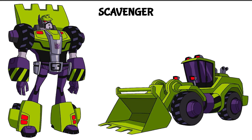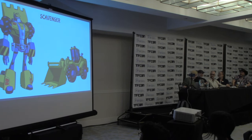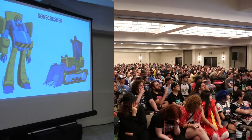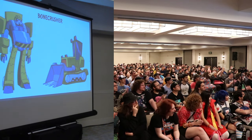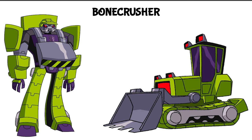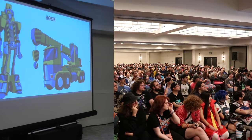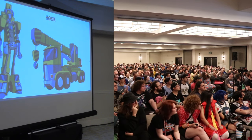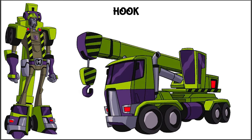Eric marvels that the conversations he had with Kian and Josh were the same kind he would have had with Derek. The Constructicons are revealed: Scavenger, Scrapper the excavator, Hook, Long Haul, and Bonecrusher. Regarding Hook, there's a crane in the show that most fan art uses for Hook, but Eric and Derek never spoke about using that thing for that particular purpose — so they're not committing to it. Josh used Eric's Bulkhead color scheme for Long Haul, with a shape on the forehead creating the impression of a Constructicon cap. Two versions exist: one with Bulkhead as the torso and one with Long Haul as the torso.